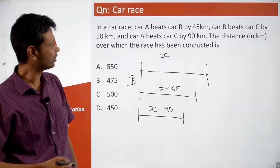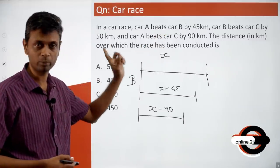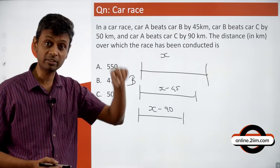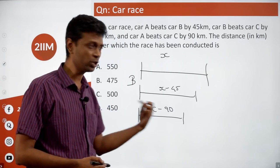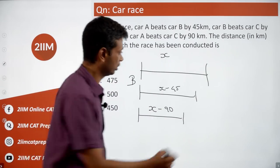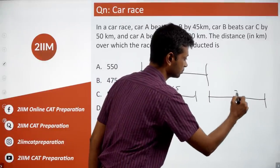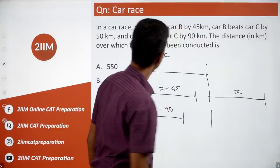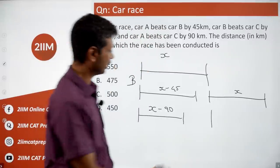The interesting thing here — we are told that B beats car C by 50 kilometers. That means when B completes the race, C would have done only x minus 50.